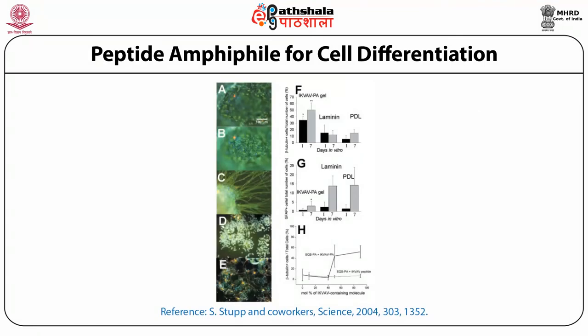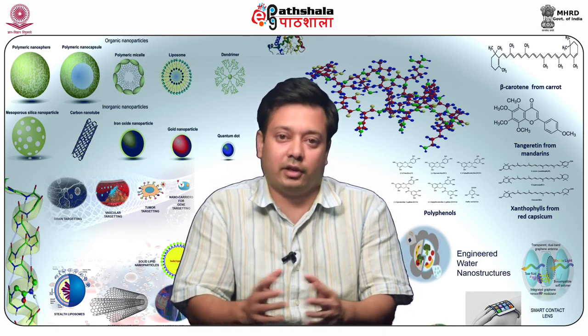The IKVAV peptide amphiphile gel forms within seven days and gives very nice neuronal cell differentiation, characterized by beta-tubulin expression, as compared to laminin or other systems where mostly astrocytes or glial cells are expressed. It is also important how much percentage of IKVAV-containing molecule is doped into the gel — beyond 40% of the IKVAV-based peptide amphiphile, better cell differentiation of the hydrogel medium is achieved.